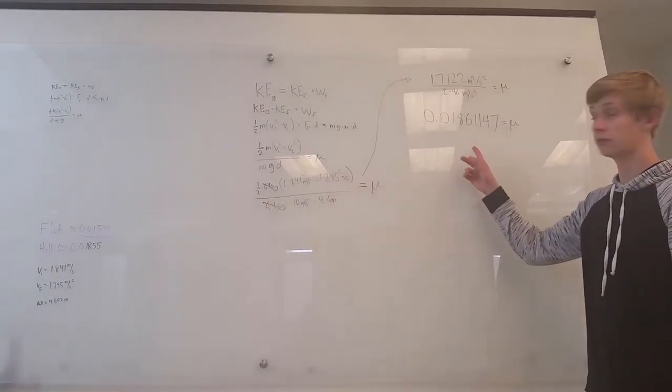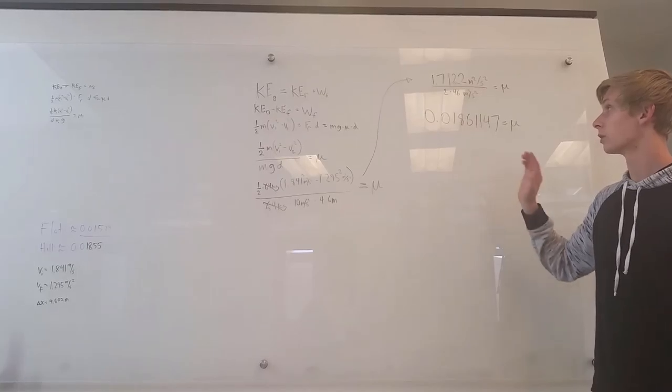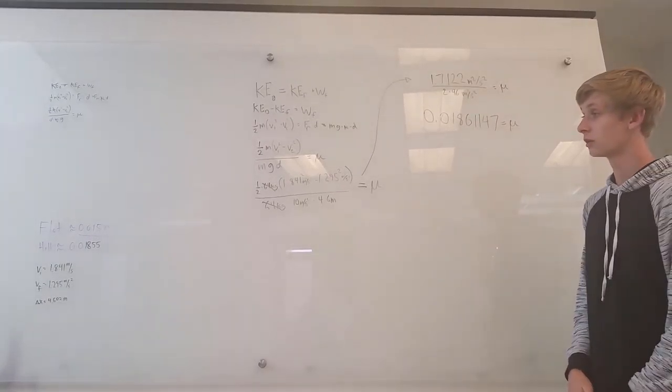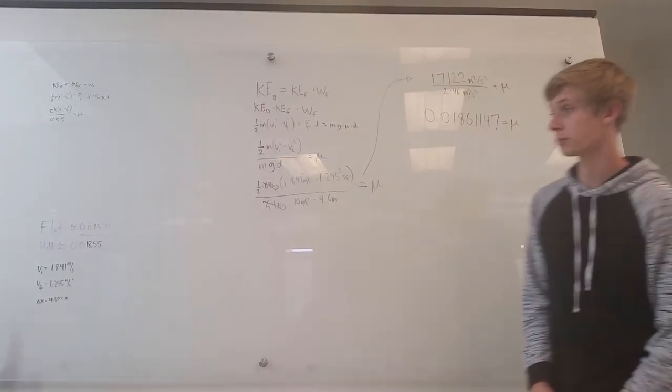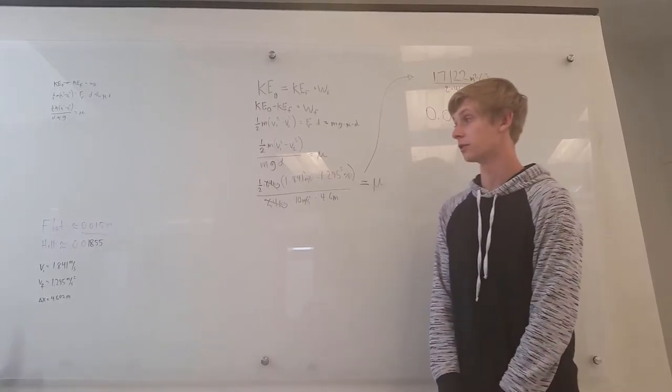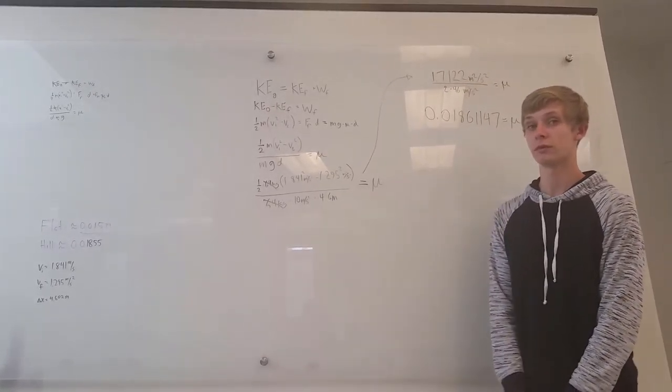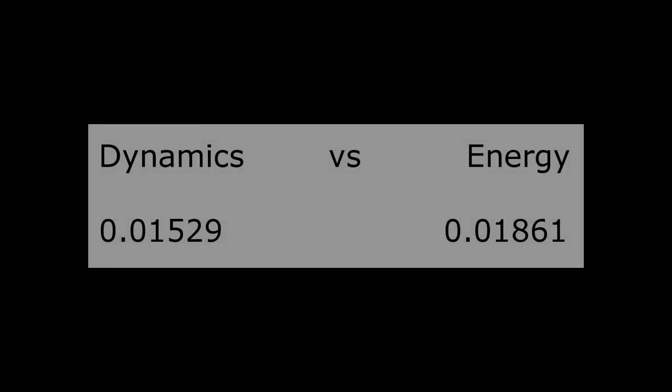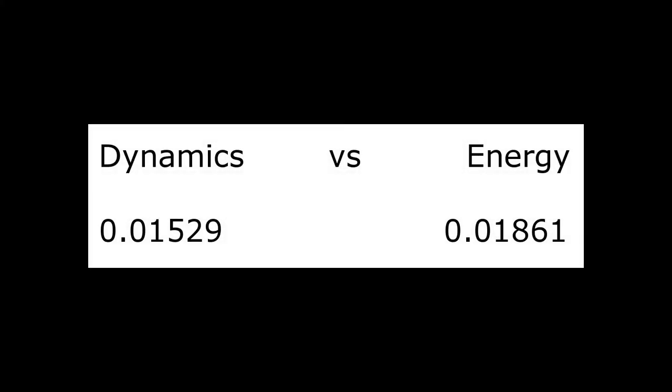As you can see, we get mu of 0.0186, which is very close to our previous mu of 0.0152. The two values that we got from mu are close enough to attribute the difference to errors in measurement.